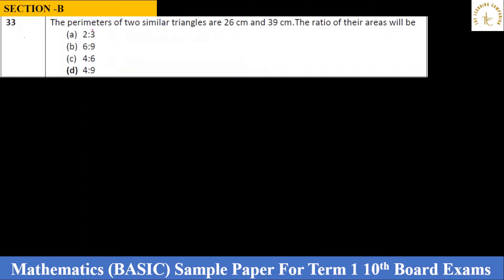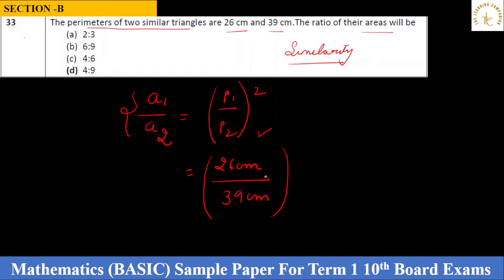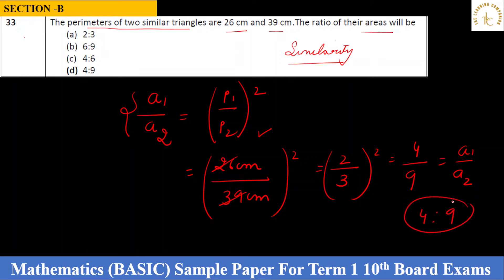Question 33: The perimeters of two similar triangles are 26 cm and 39 cm. Find the ratio of their areas. The ratio of perimeters is 26:39 = 2:3. The ratio of areas of similar triangles equals the square of the ratio of their corresponding sides, so (2/3)² = 4/9. The answer is 4:9, which is option D.